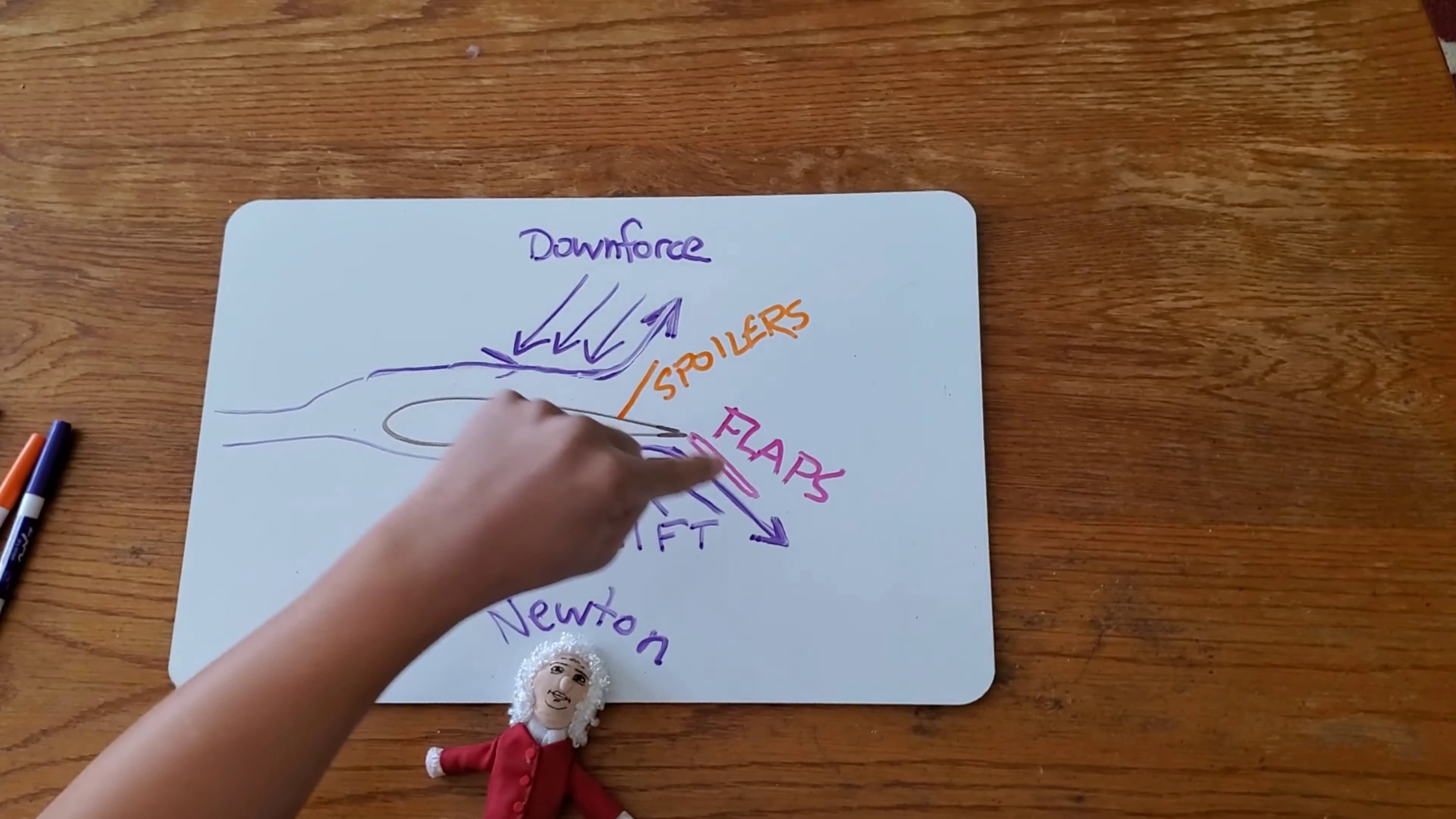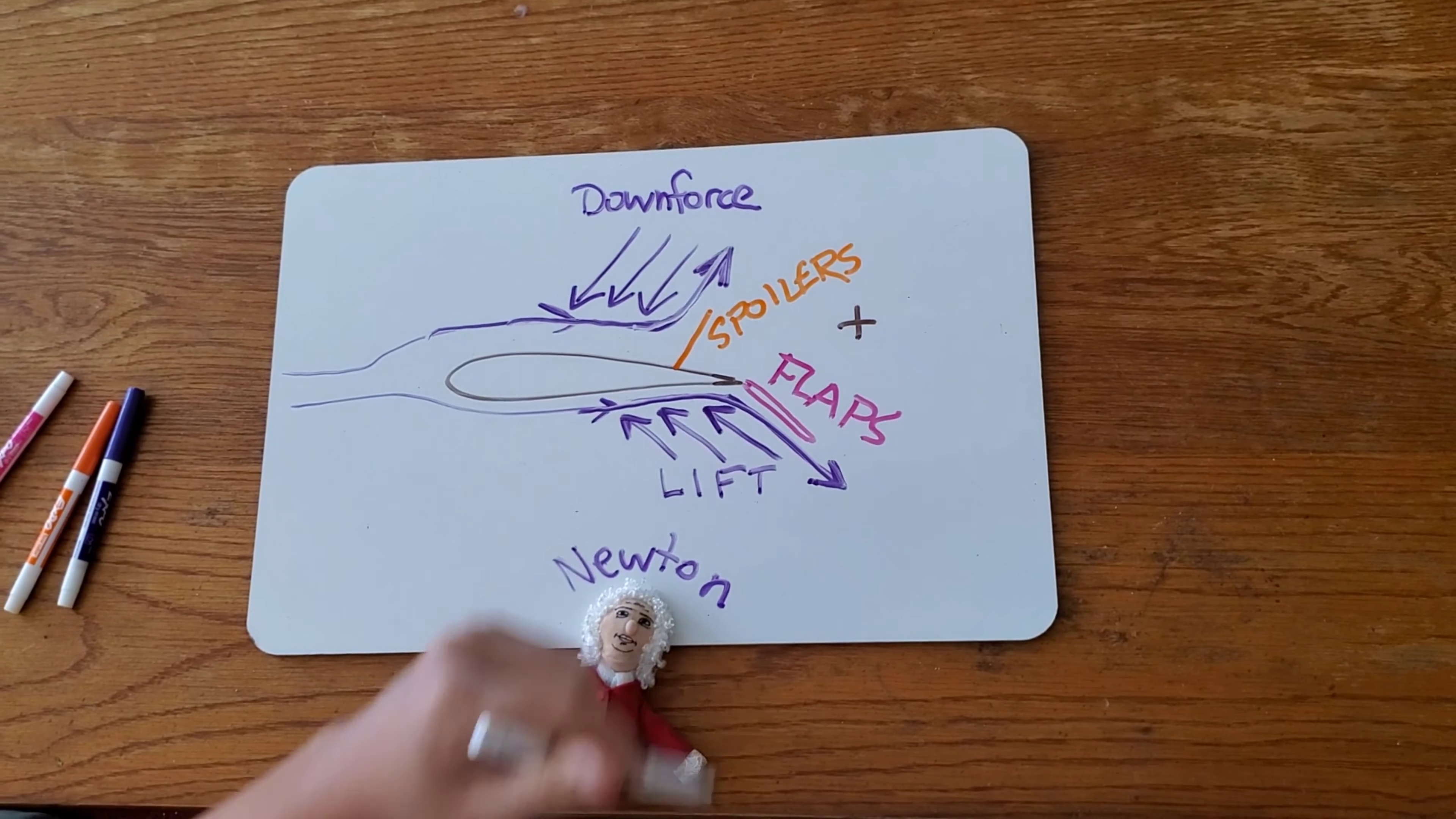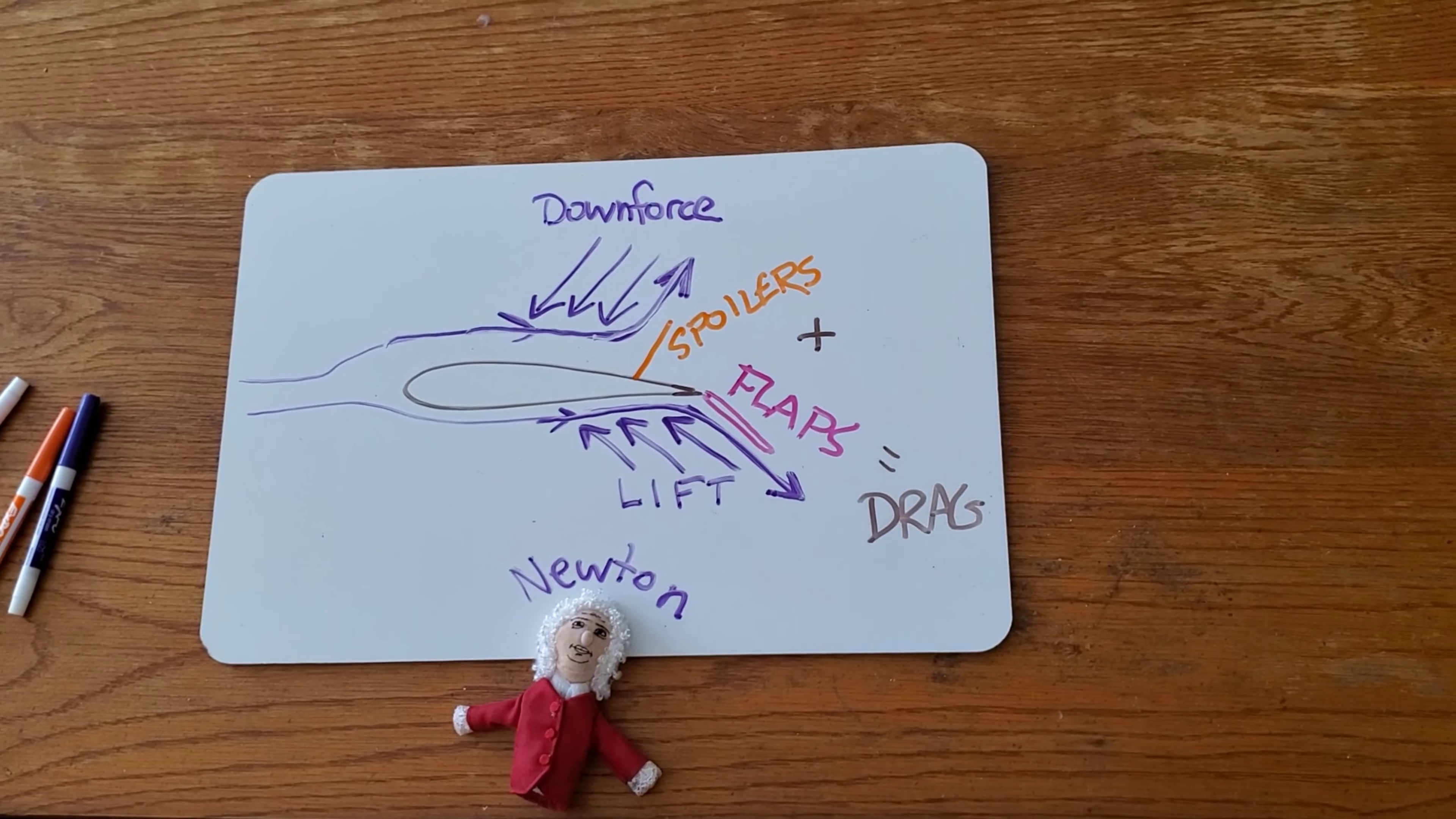Now, taken together, spoilers and flaps both change the shape of the wing. One changes it this way and the other changes it this way. Both of these things together are providing another force. Spoilers plus flaps provide drag. They're essentially helping to slow the airplane down. Flaps and spoilers together do that.